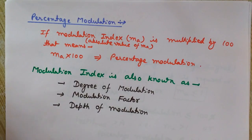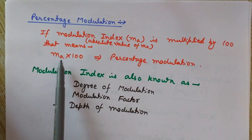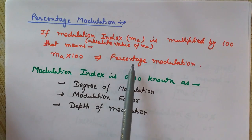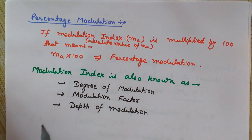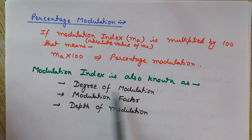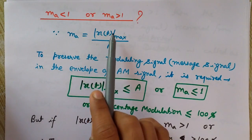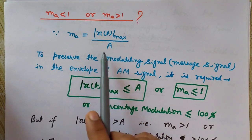Percentage modulation is simply the absolute value of the modulation index multiplied by 100. The modulation index is also known by three other names: degree of modulation, modulation factor, and depth of modulation. These three names are the same as the modulation index, defined by the ratio of xt_max to the maximum amplitude of the carrier wave.